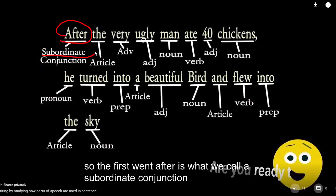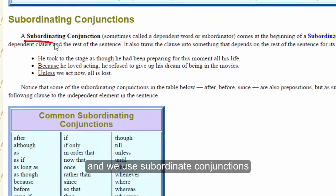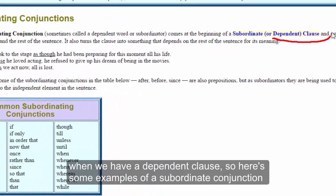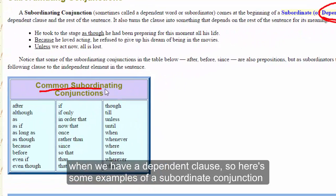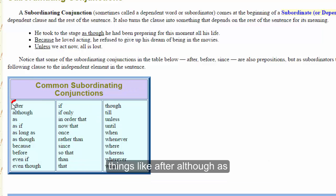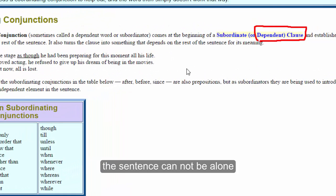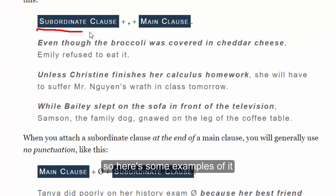The first word, 'after,' is what we call a subordinate conjunction. We use subordinate conjunctions when we have a dependent clause. Here are some examples of subordinate conjunctions: words like after, although, as, if, if only. Basically, a dependent clause means the sentence cannot stand alone.